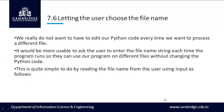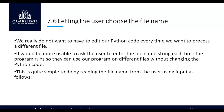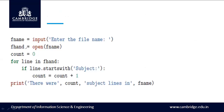Next topic is letting the user choose the file name. We already studied the built-in input() function in Python, where the user is prompted to enter something from the keyboard. We don't want to edit our Python code every time we want to process a different file. So we use the input() function to prompt the user to enter the file name, and fhandler is used to open that particular file name entered by the user.